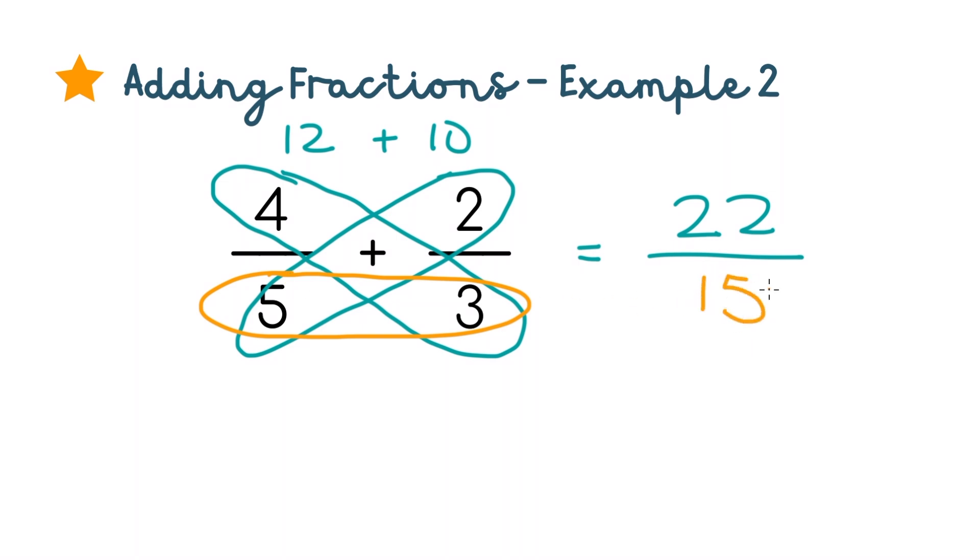You'll notice with this one that the top number is bigger than the bottom, so if your teacher wants you to simplify this into a mixed number, 15 only goes into 22 once, so the whole number is 1, and we'll have 7 left over. This is our simplified answer.